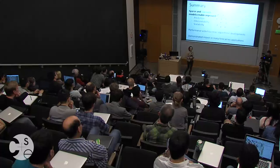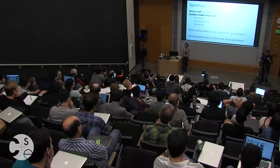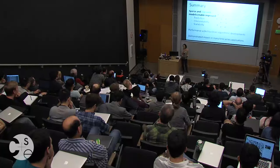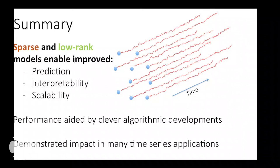In summary, we looked at how sparse and low-rank models allow improved prediction, interpretability, and scalability, and how performance can be aided by clever algorithmic tricks. We demonstrated the impact in many different time series domains. This is one of those cute examples of how sometimes you can get away with simpler models if it allows you to coherently use all your data.